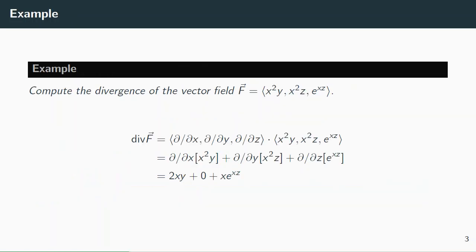The way to compute it is pretty straightforward. Here's a nice example: compute the divergence of the vector field (x²y, x²z, e^(xz)). You take the x, y, z partial derivatives and dot them with the three components. So the x derivative of the p component is 2xy, the y derivative of the q component is zero, and the z derivative of e^(xz) is xe^(xz). Add those three together — that's the divergence of that vector field.